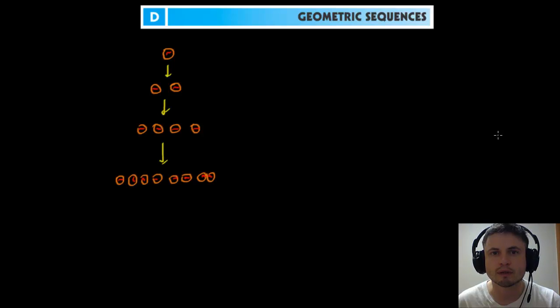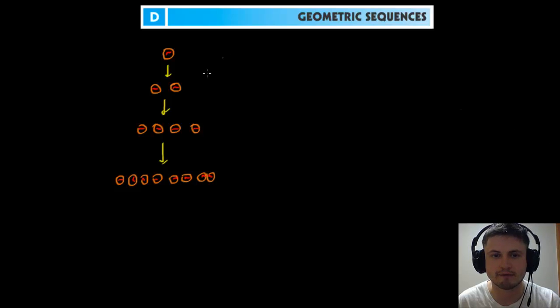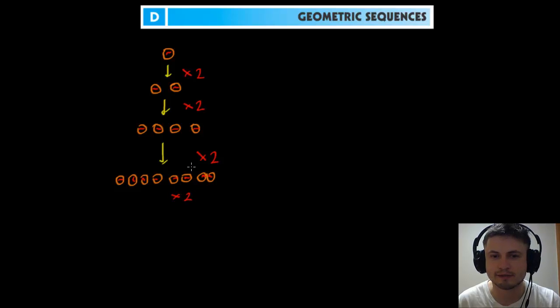Hello and welcome to What the Math. Today we'll be talking about geometric sequences. One of the more common examples of geometric sequences is bacterial growth that you can find in real life. This is a visual example of what's happening: every hour a bacteria splits into two, then they become four, then eight, doubling each time and so on.